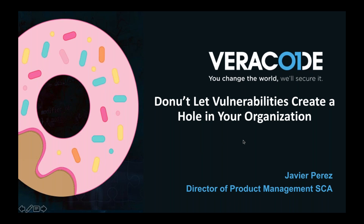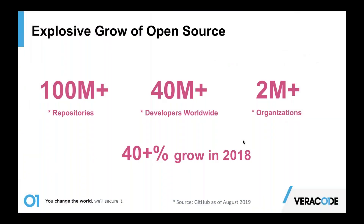I'm going to talk about the explosive growth of open source. These numbers are unbelievable, and by the way, these are just from GitHub — recent numbers from August 2019. That's not the only place where there's open source software, but using GitHub as a reference, being the largest repository for open source, just look at these numbers: over a hundred million repositories, more than 40 million developers and growing, and over 2 million organizations.